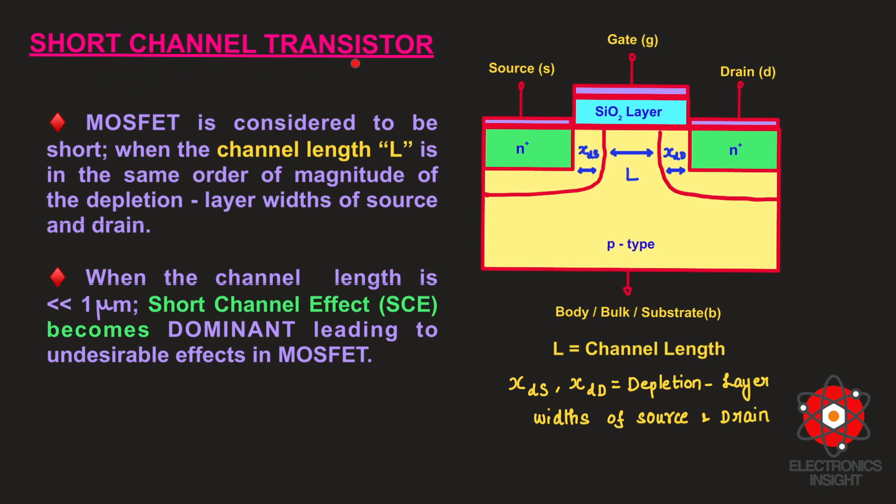Also, there is another interpretation: when the channel length capital L is less than 1 micrometer, then you call that as a short channel transistor, and short channel effects start dominating, leading to undesirable effects at this stage.